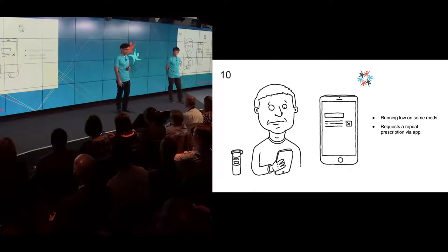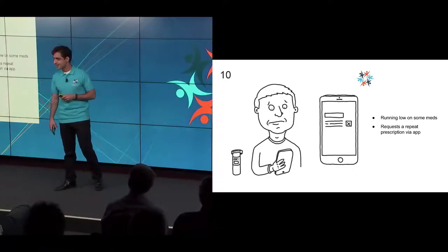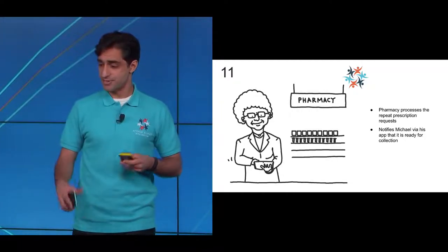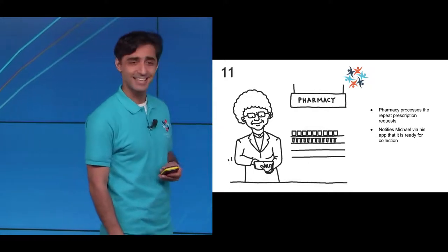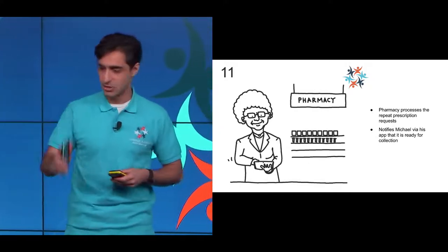In the week, as we do, we run out of medication. Michael is low on medication, so he sends a repeat prescription request via his app to a local chemist. The lovely pharmacist will process that and tell Michael it's ready to collect now. Why can't he get a notification back on his app?